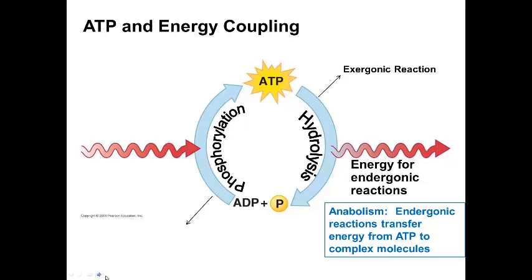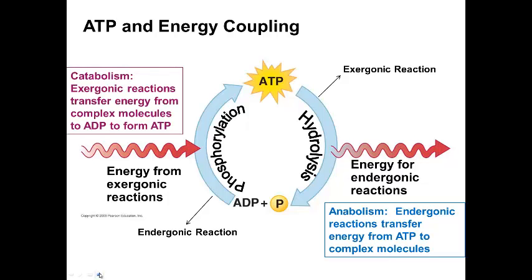The other side of the equation is that when ATP is formed from ADP, that's an endergonic reaction. That is something has to be put in, energy, for ATP to be formed. Energy from exergonic reactions in the cell drive the formation of ATP. So those are the catabolic reactions. Exergonic reactions from the transfer of energy from complex molecules to ADP to form ATP. So together, those reactions get coupled.